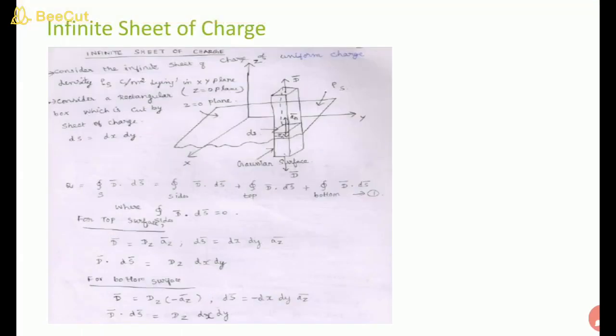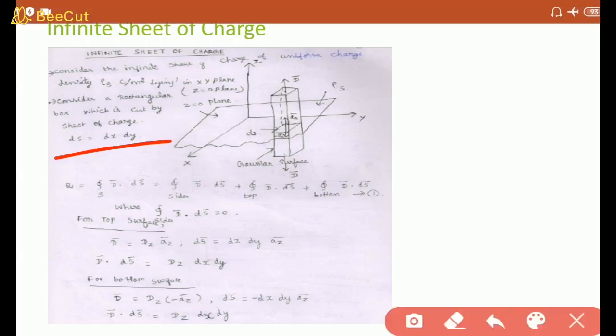Next: application of Gauss law for infinite sheet of charge. Consider an infinite sheet with uniform charge density ρ_s in the xy plane. The sheet is cut by surface element dS = dx·dy. According to Gauss law, Q = ρ_s × area. Three surfaces: top, bottom, and side.